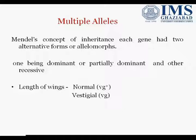For example, the length of wings in Drosophila is of two types: one is normal, represented as VG-plus, and another is vestigial, represented as VG. Normal is the dominant form and vestigial is the recessive form. Each gene has two alternative forms, called alleles or allelomorphs.